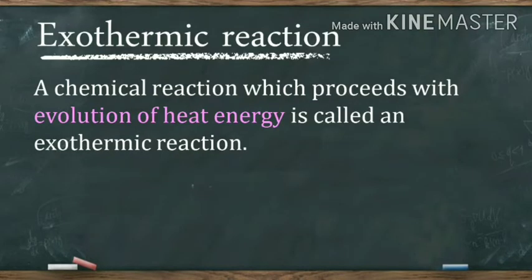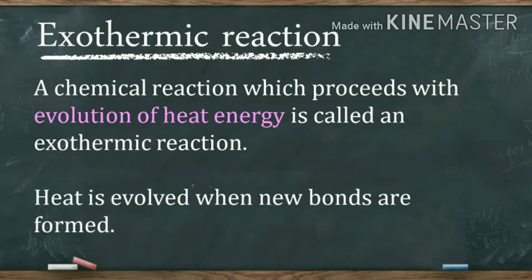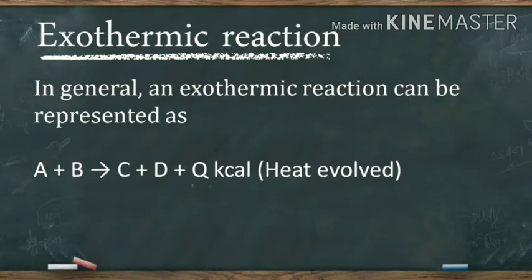First of all, we have exothermic reaction. During an exothermic reaction, heat is given out. A chemical reaction which proceeds with the evolution of heat energy is called an exothermic reaction. Heat is usually evolved when new bonds are formed. As energy is released, the container in which the reaction takes place will be warm. The exothermic reaction is represented by writing the amount of heat evolved on the product side with a plus sign.